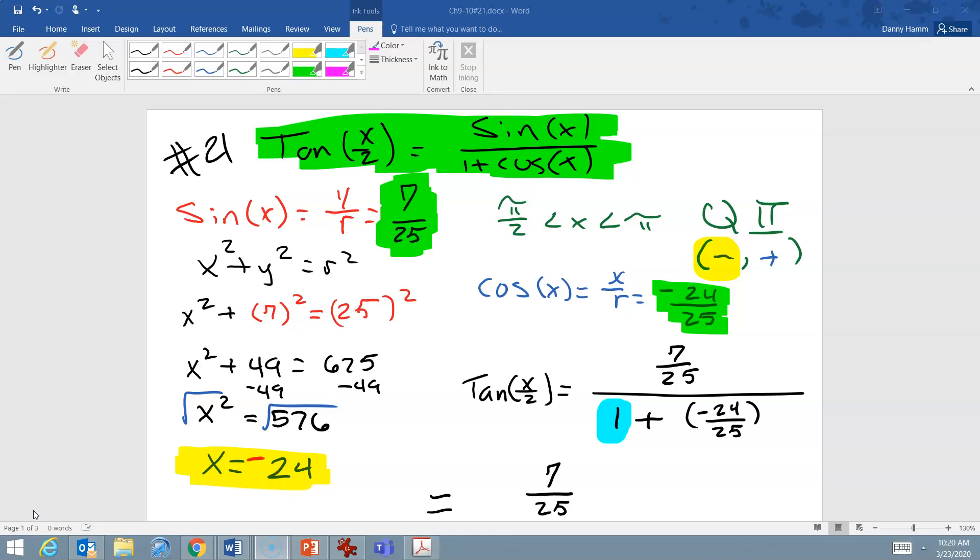So we are given the value of sine of x, which is 7 over 25, and we must remember that sine of x is equal to the ratio of y over r. Now, we're also given what quadrant we're in. So we're given pi over 2 and pi, so somewhere in between pi over 2 or 90 degrees and 180 degrees with pi. So we know that we're in quadrant 2, and this information tells us that our cosine is negative and our sine is positive.